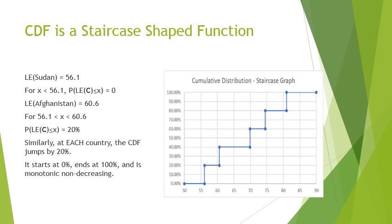Here is a picture of the CDF of the life expectancy random variable. Sudan has the smallest life expectancy at 56.1. If x is less than 56.1, no country's life expectancy will be less than or equal to x, so the probability is 0. The graph starts at 0 and remains at 0 until it reaches 56.1.